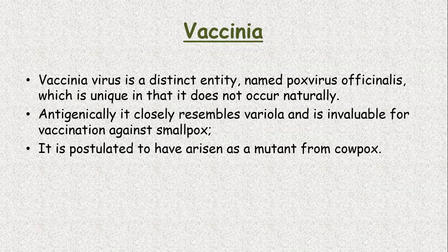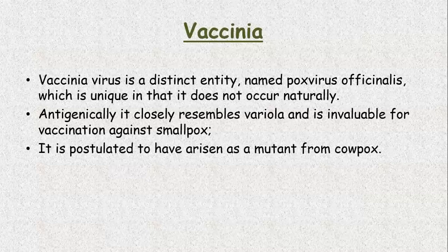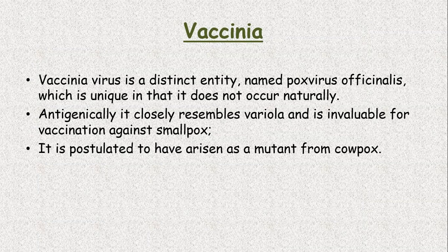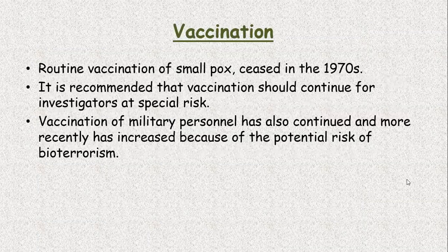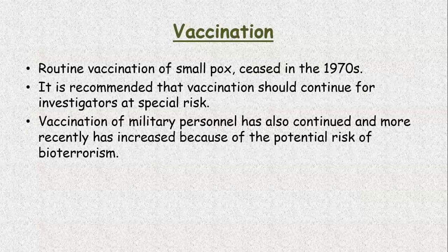Vaccinia virus. Vaccinia virus is a distinct entity from variola and is also named as poxvirus officinalis, which is unique in that it does not occur in nature. Antigenically, it closely resembles the variola virus and is invaluable for vaccination against smallpox. It is postulated to have arisen as a mutant from cowpox. Routine vaccination for smallpox ceased in 1970, and it is recommended that vaccination should continue for investigators at special risk. Vaccination of military personnel has also continued and has increased more recently because of the potential risk of bioterrorism.